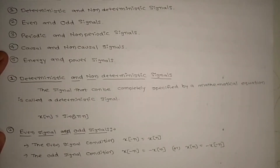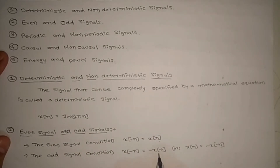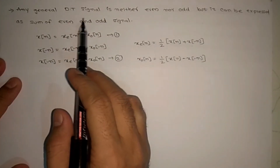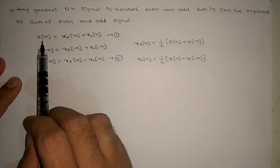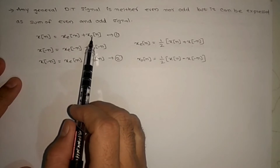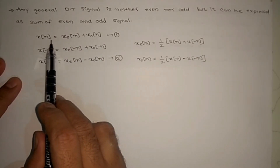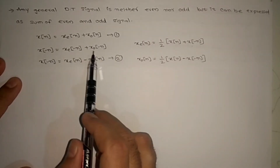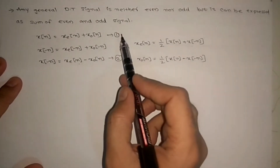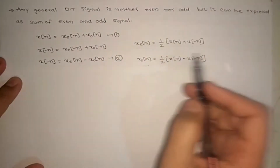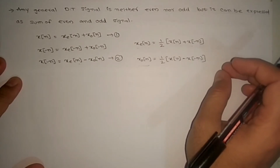Next, let us see the second one: even signal. x of minus n equal to x of n — then we will call it an even signal. x of minus n equal to minus x of n — then we will call it an odd signal. Same conditions we used in continuous time signal. Any general discrete time signal is neither even nor odd, but it can be expressed as sum of even and odd parts: x of n equal to x_e of n plus x_odd of n. If we substitute minus n in this equation, we can derive the even and odd parts of the signal.